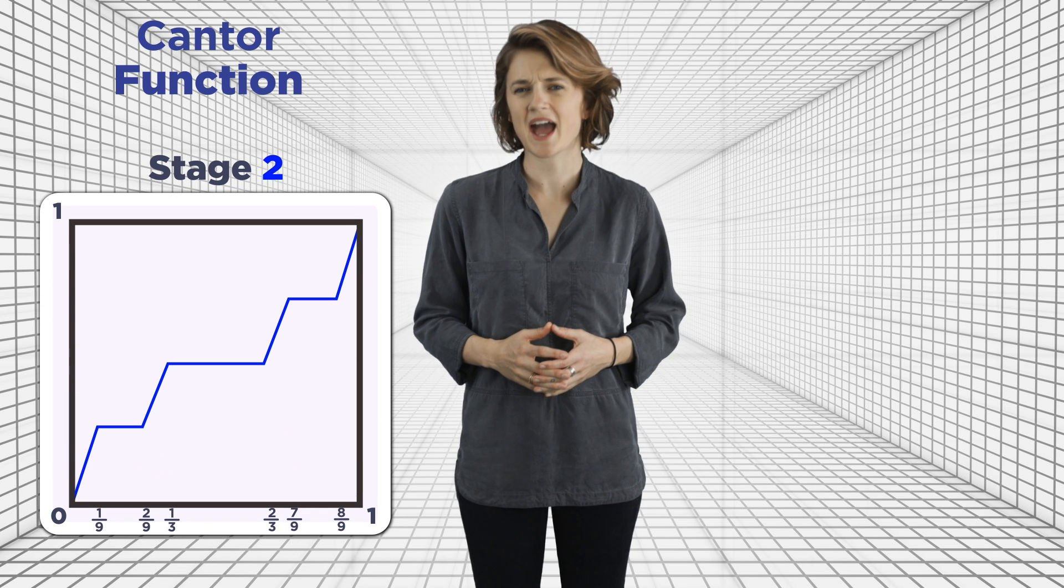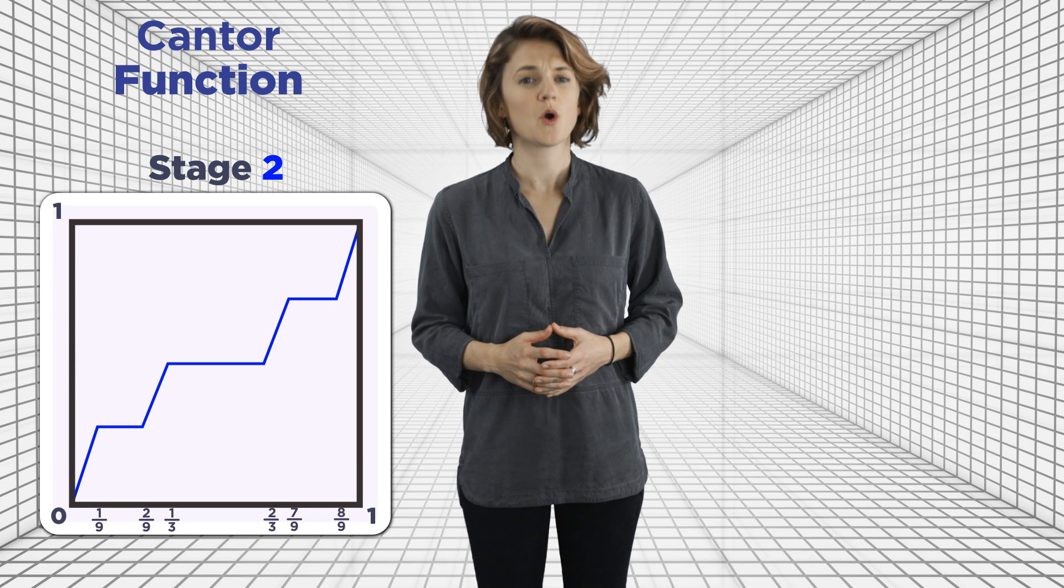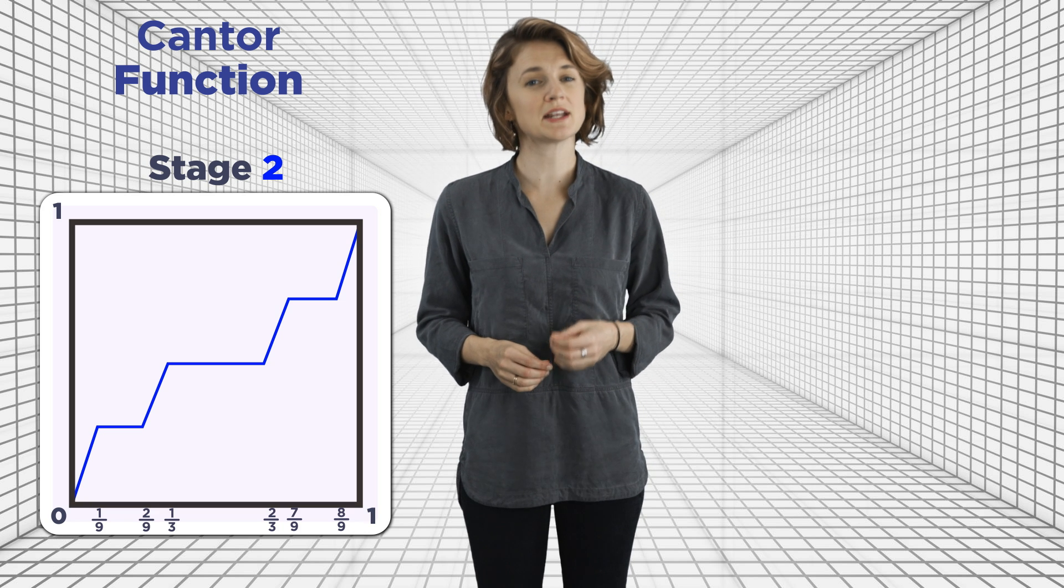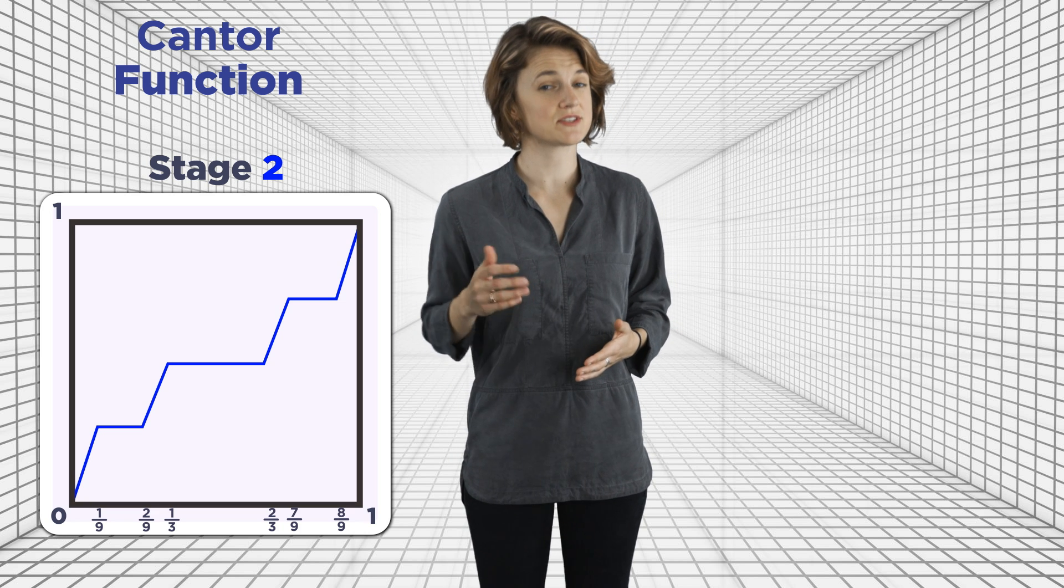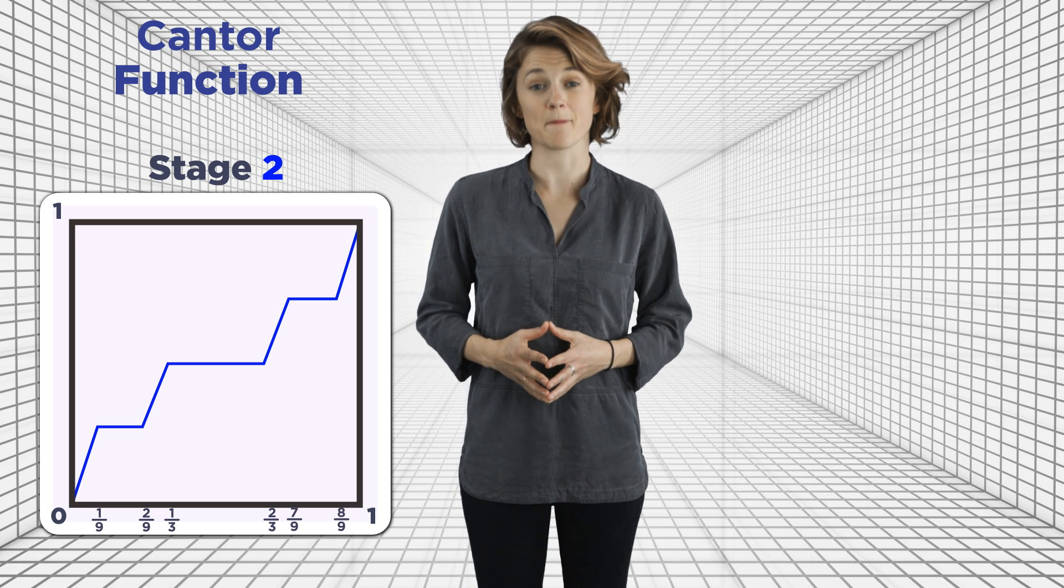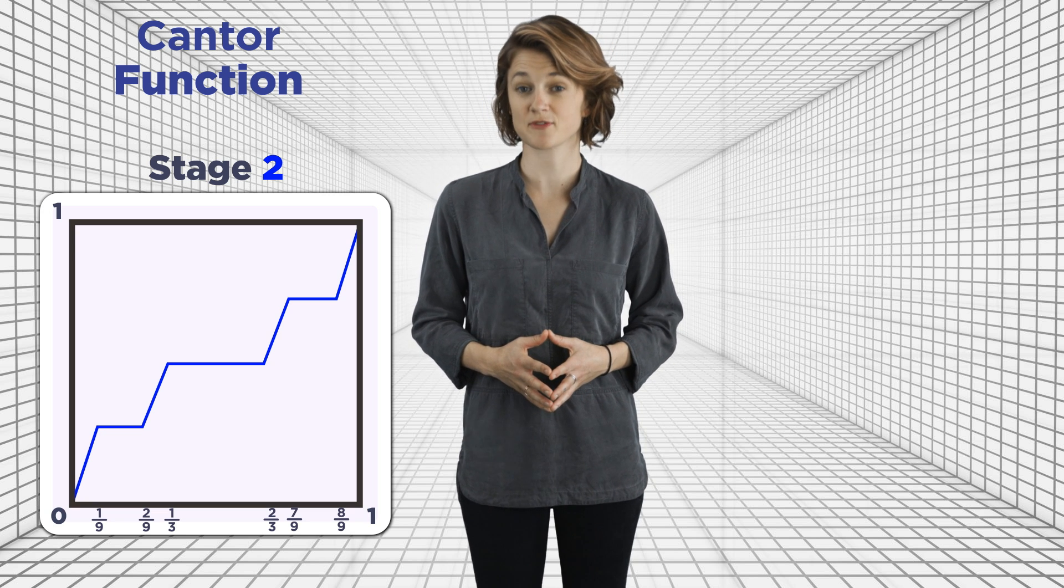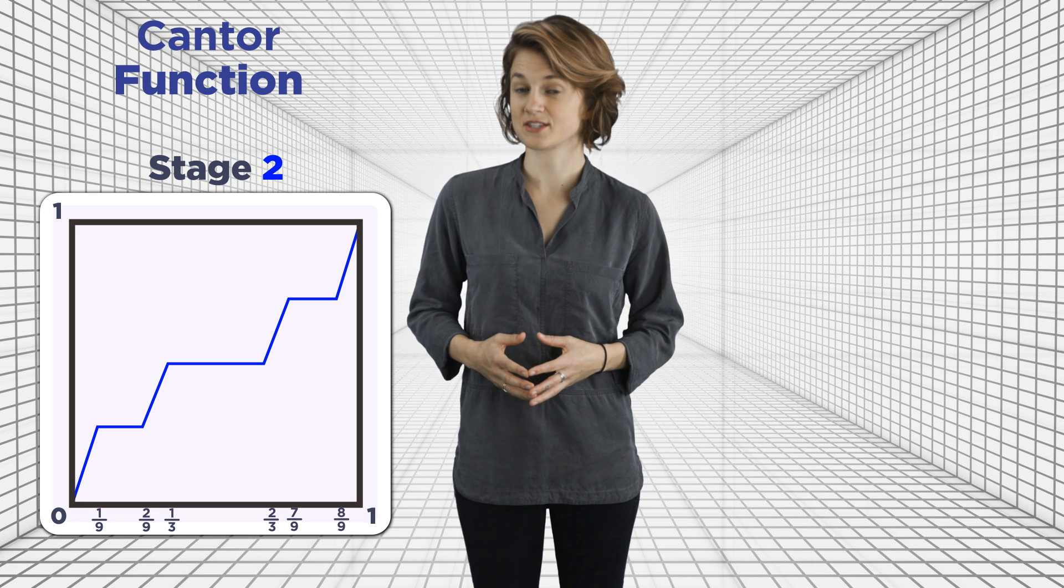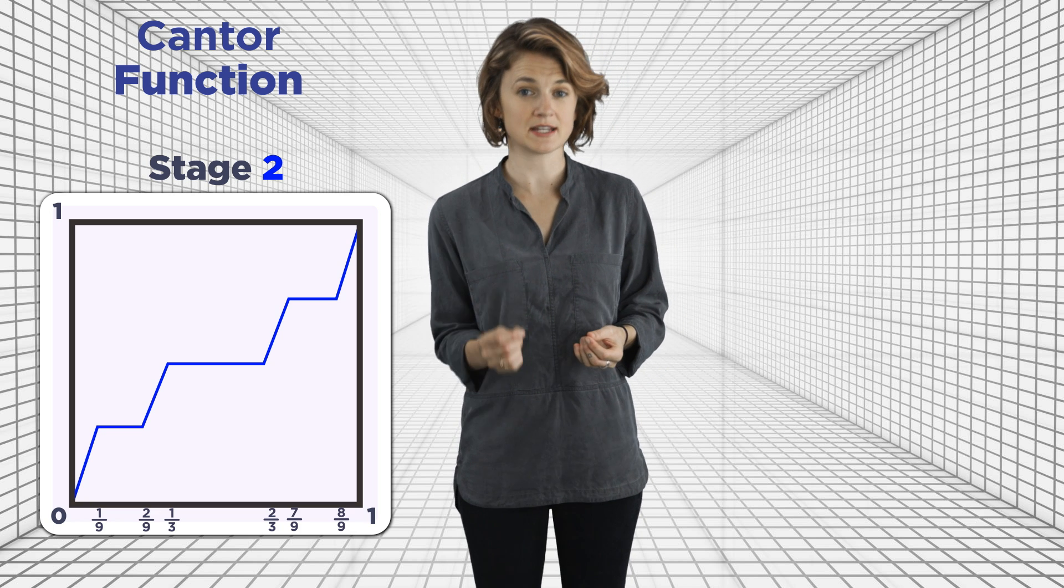At stage two, we add two more flat lines, one at height one-quarter, from one-ninth to two-ninths, and one at height three-quarters, from seven-ninths to eight-ninths. Notice that these two flat lines are the middle third of the diagonal segments from stage one. And now, we add in diagonal lines to fill it in, starting at zero and ending at one.